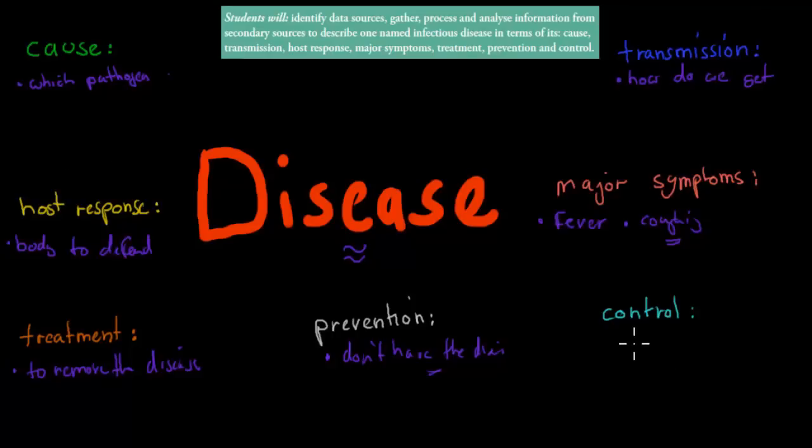Now control means what happens if someone has the disease and we want to make sure it doesn't spread. So no spread or less chance of it spreading. So we want to control the spread of the disease once people have it.